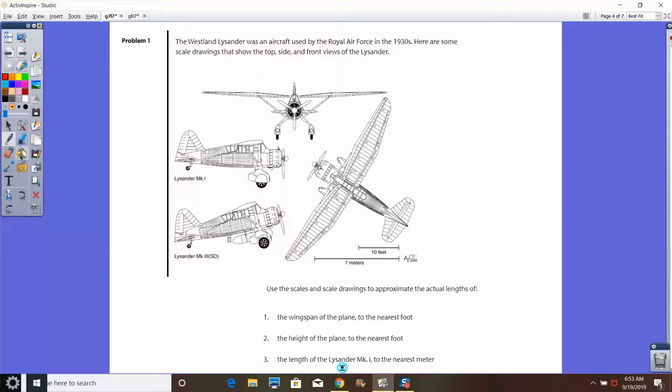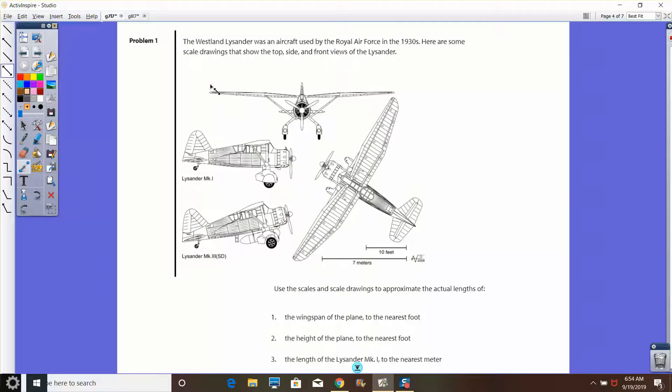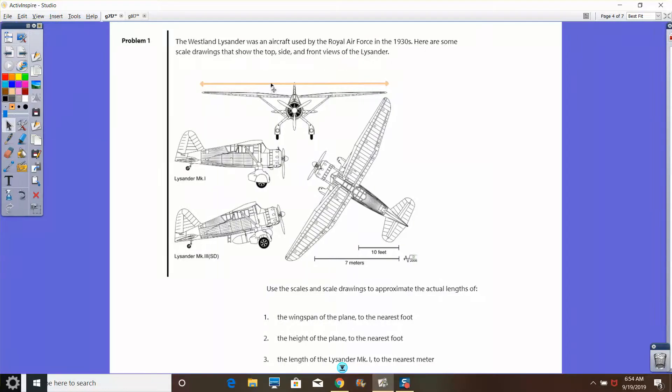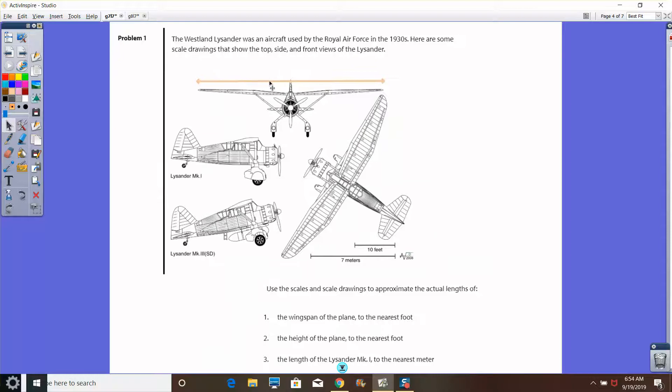Now I just want to point out, when it asks for the wingspan of the plane, which of the drawings do you think is going to help you do that? I think a better drawing to use is actually going to be this drawing right here, because you actually can get this wingspan just using a horizontal measurement. If you just measure this wingspan using a horizontal line, you'll get that to the nearest foot, and then compare it to the scale.